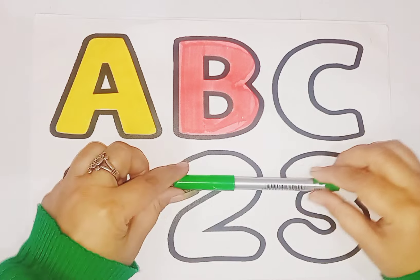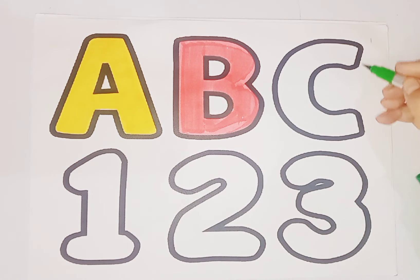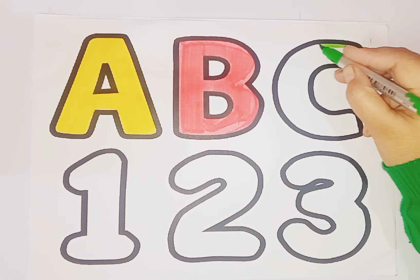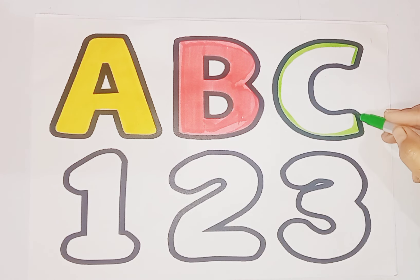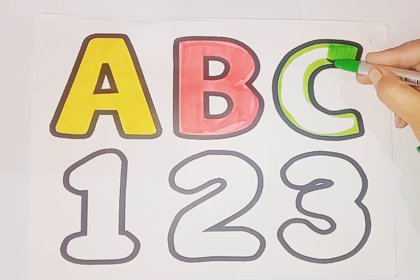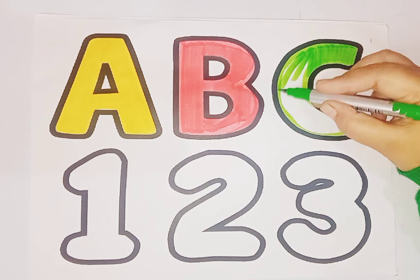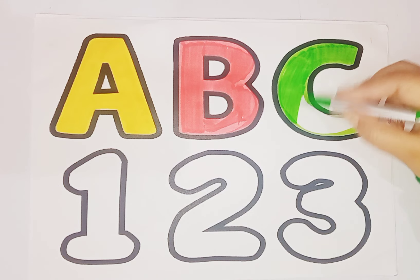Next is light green color. Alphabet C. C is for Carrot. And alphabet C. This is alphabet C.